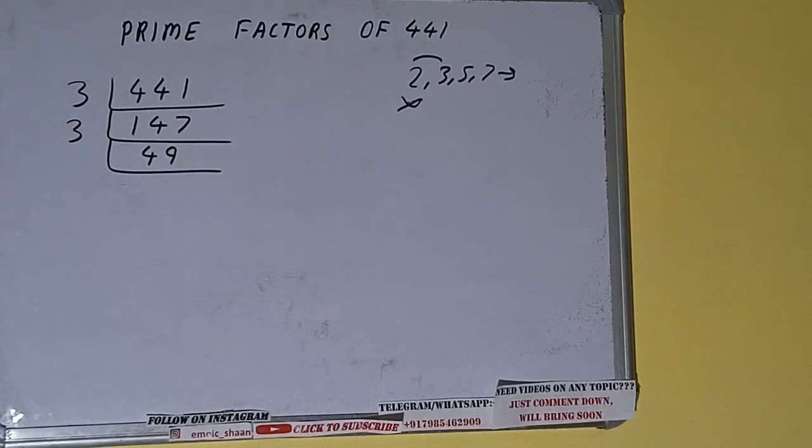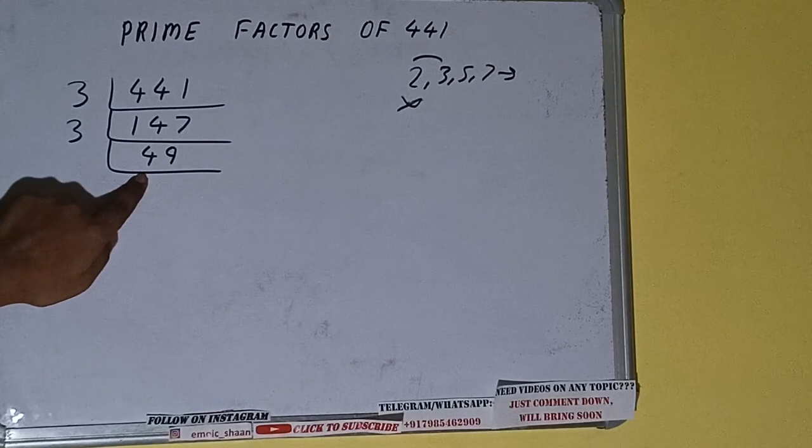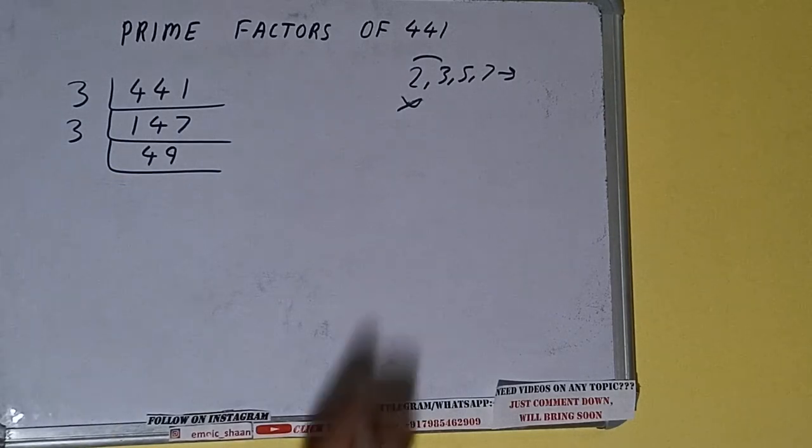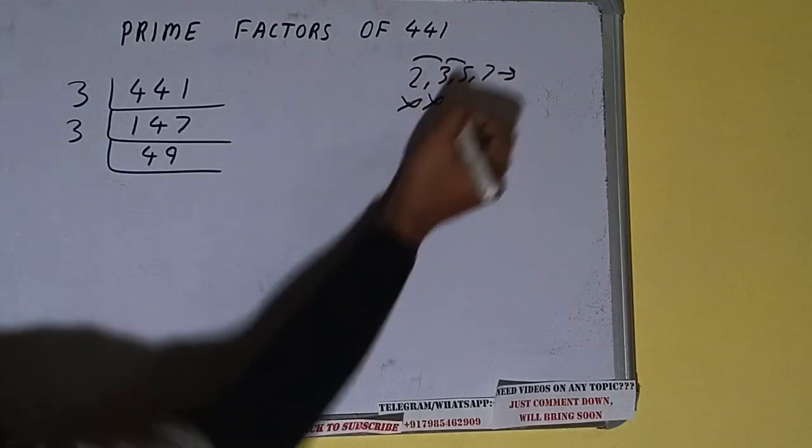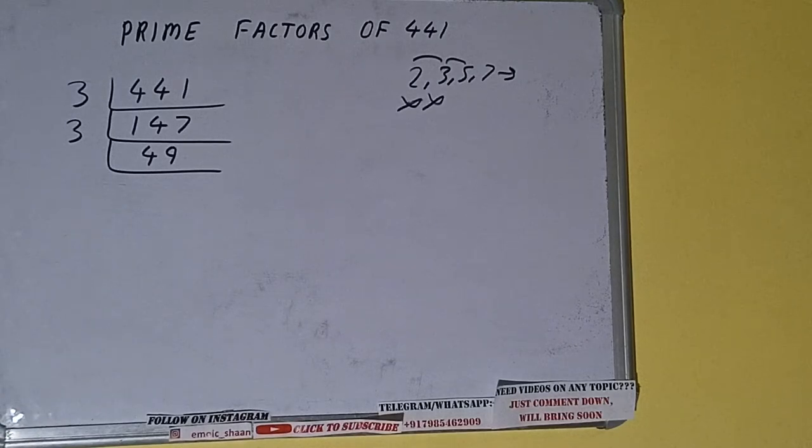Now is this 49 further divisible by 3? The answer is no. If you check, it is not divisible. So let's check with 5. The last digit is neither 0 nor 5, so it is not divisible by 5 also.